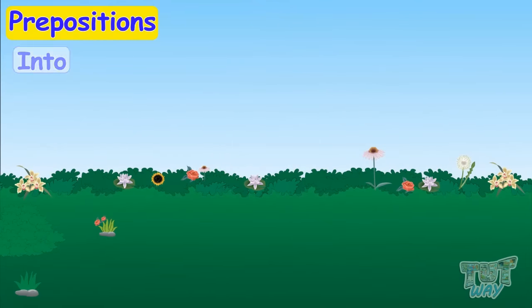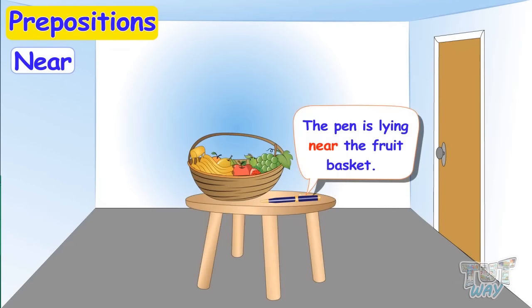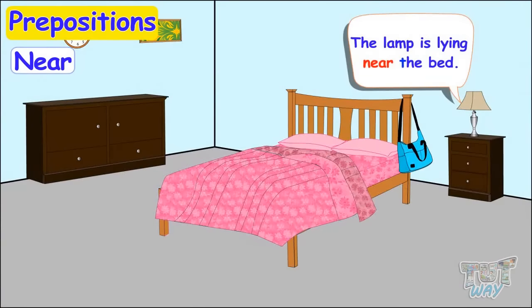Now, here is our next preposition and it is 'near'. The cat is sitting near the table. When something is close to something, we say 'near'. The pen is lying near the fruit basket. The lamp is lying near the bed.